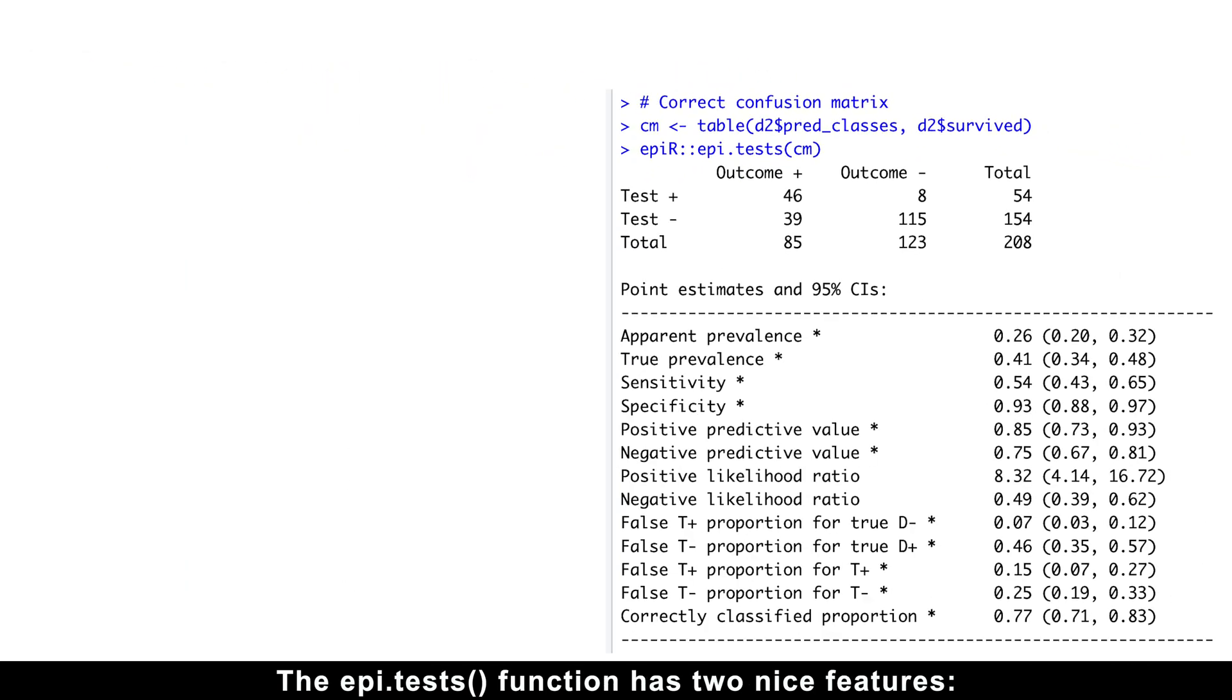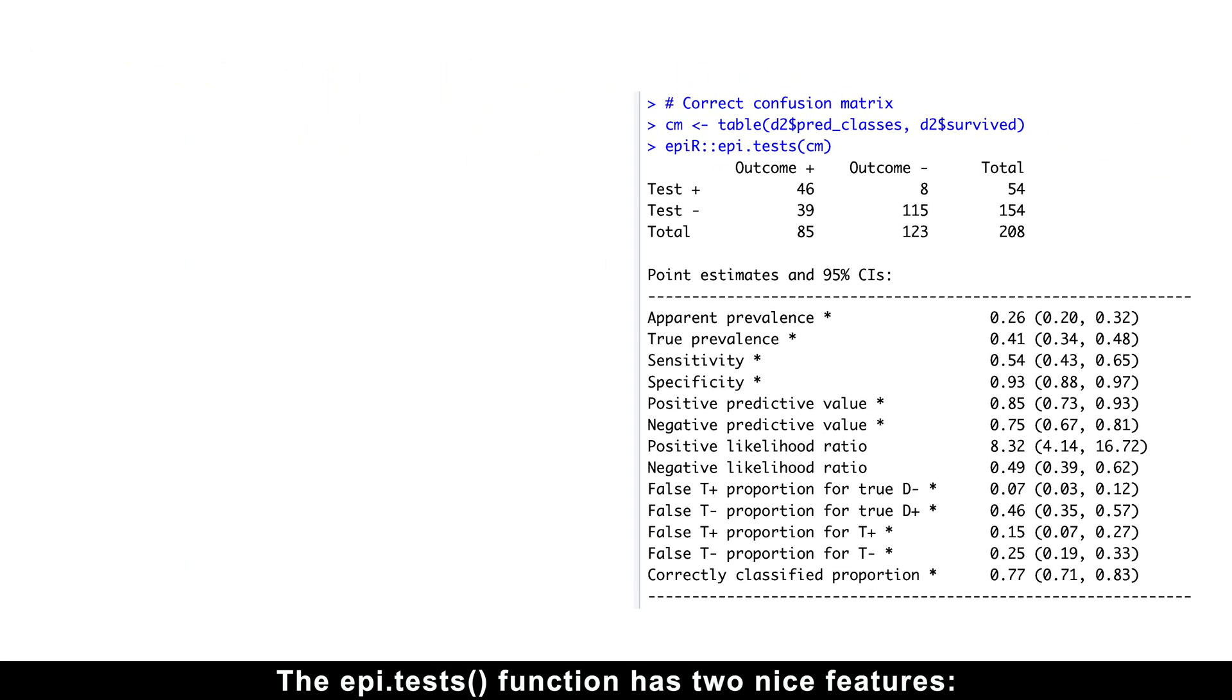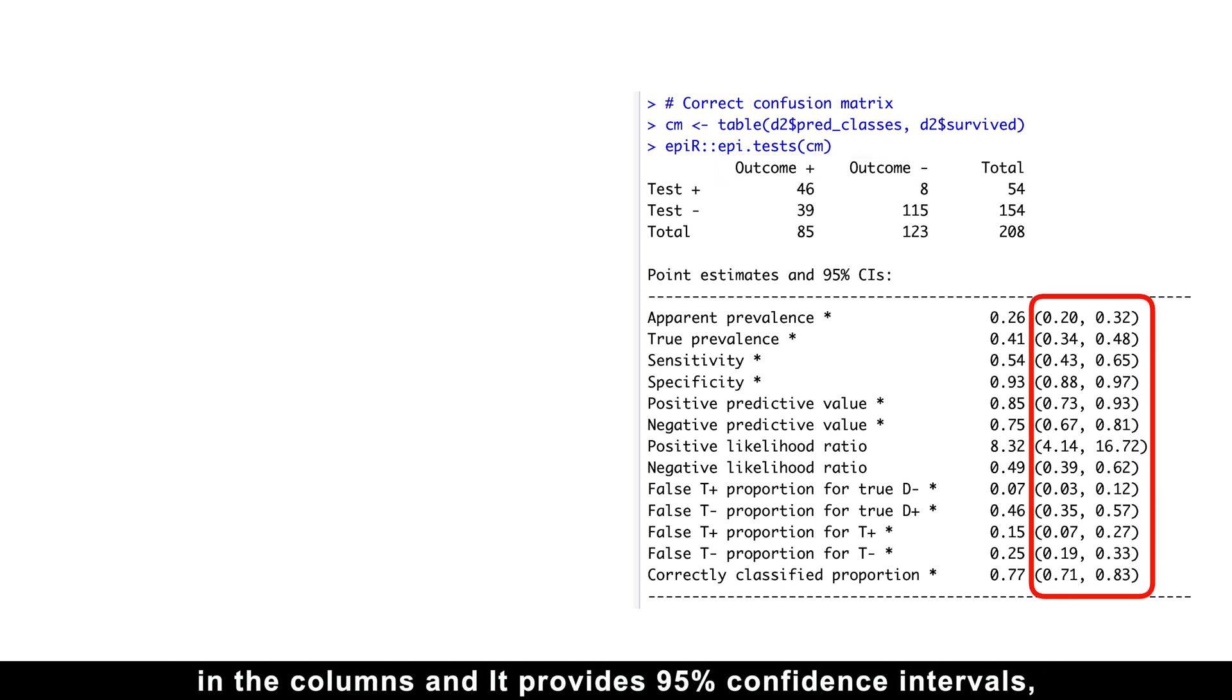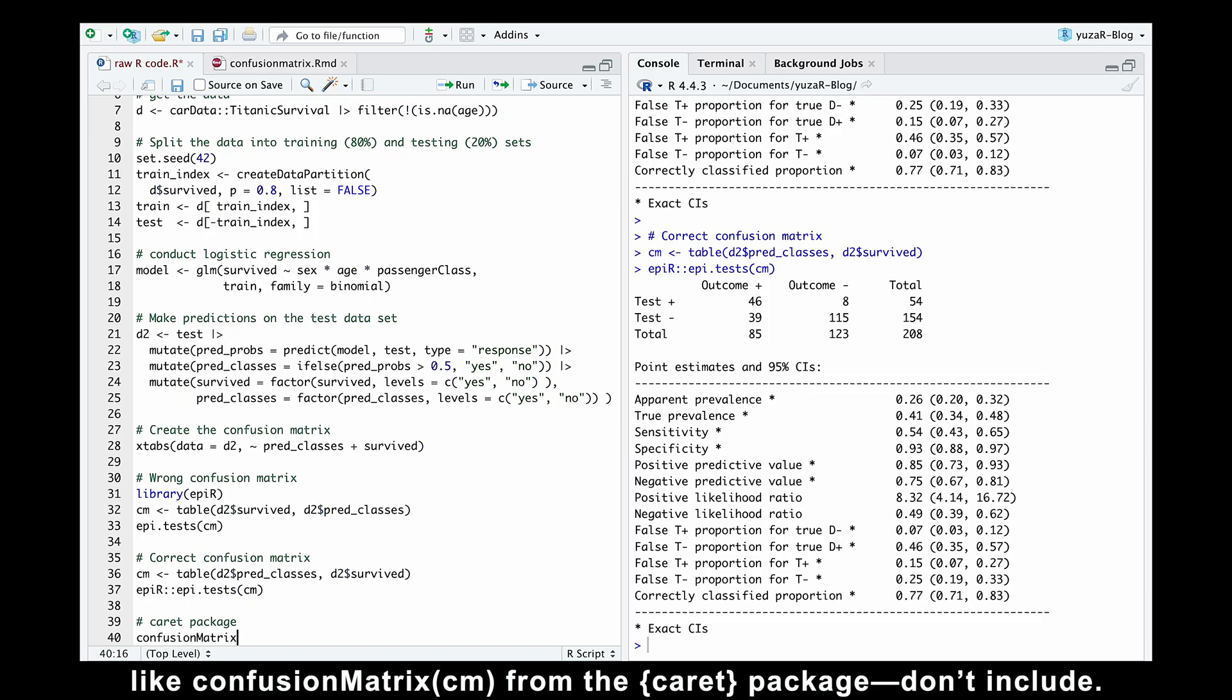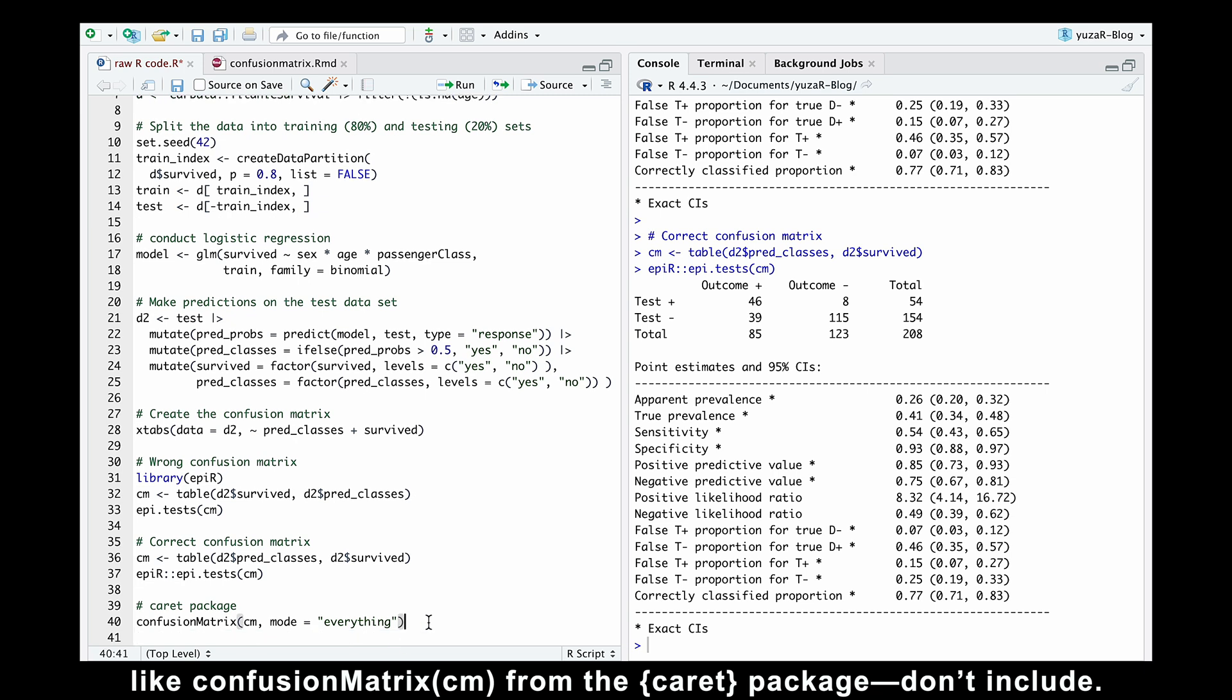The epitests function has two nice features. It reminds you to place the true outcomes or actual values in the columns. And it provides 95% confidence intervals, which many common machine learning functions like confusion matrix from the caret package don't include.